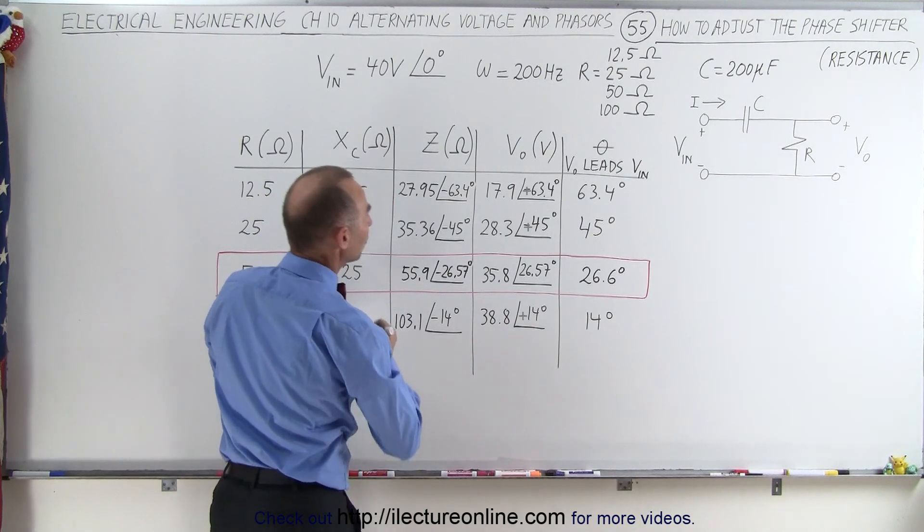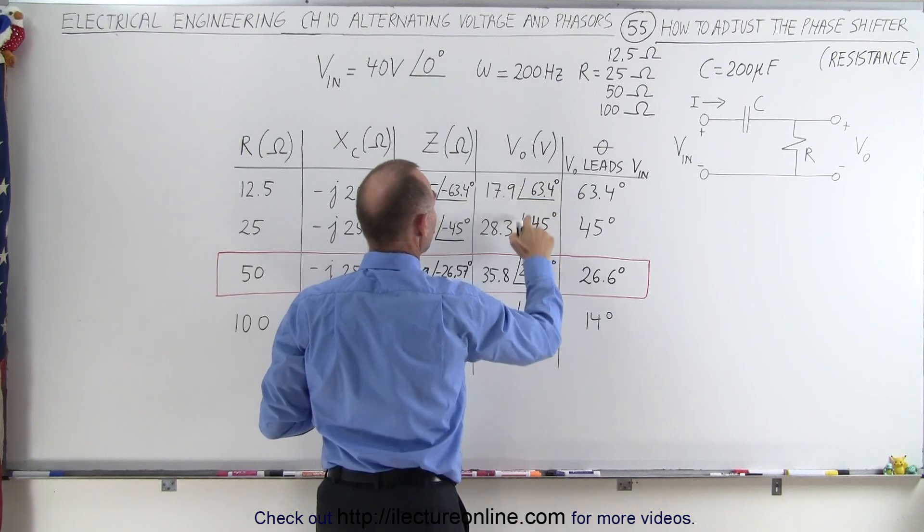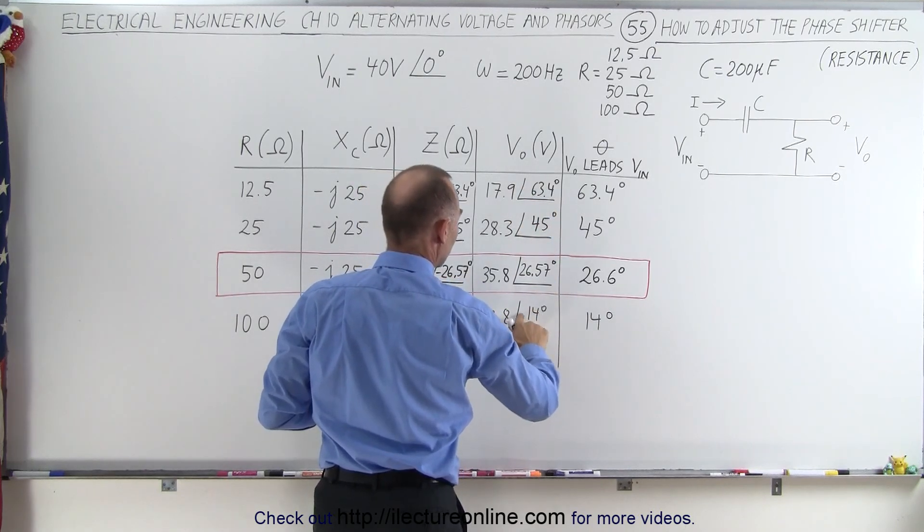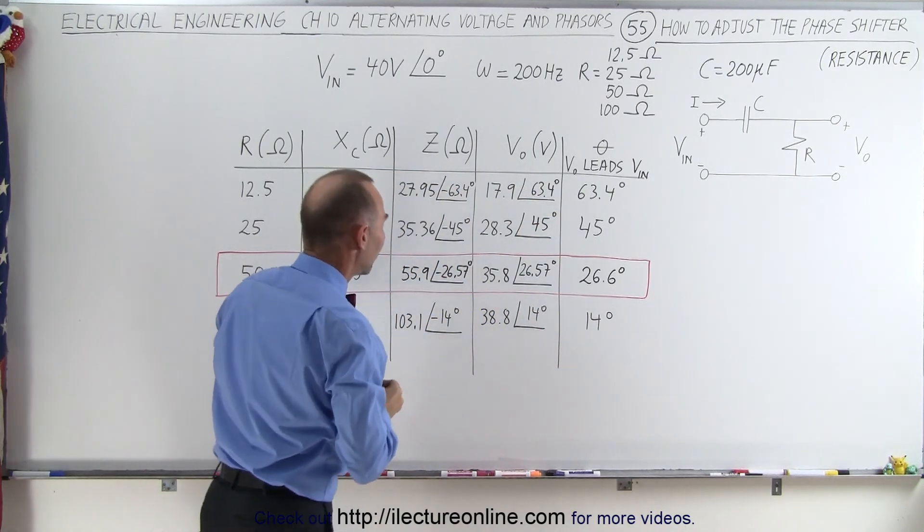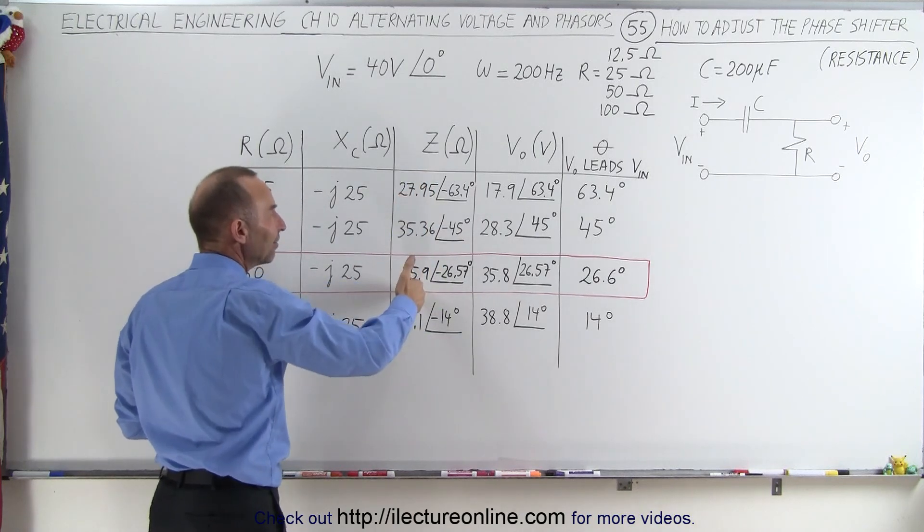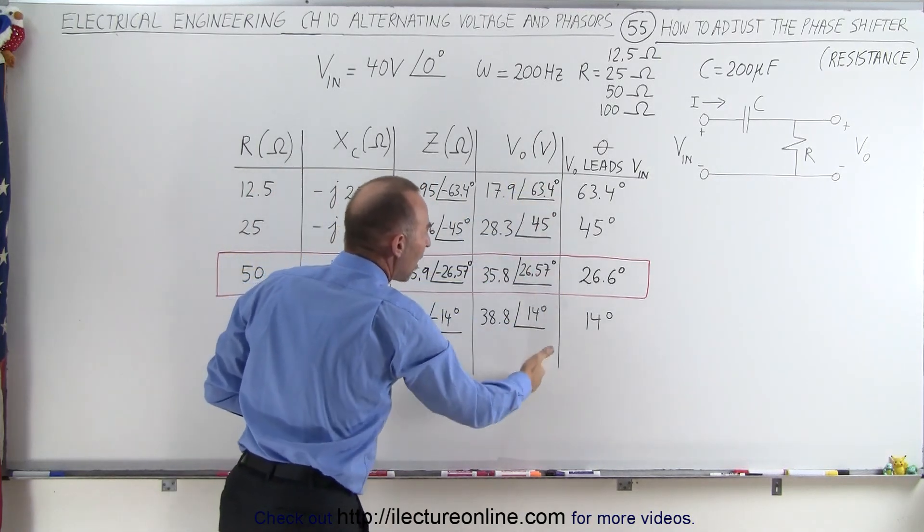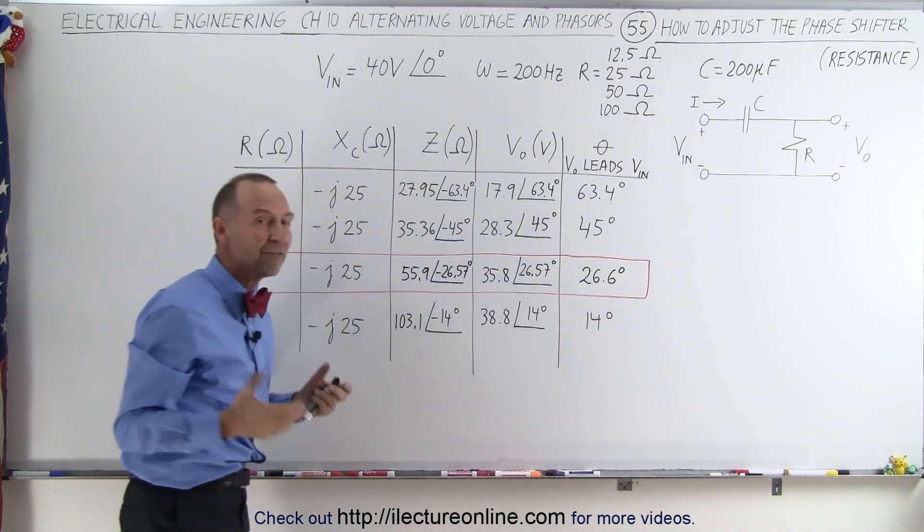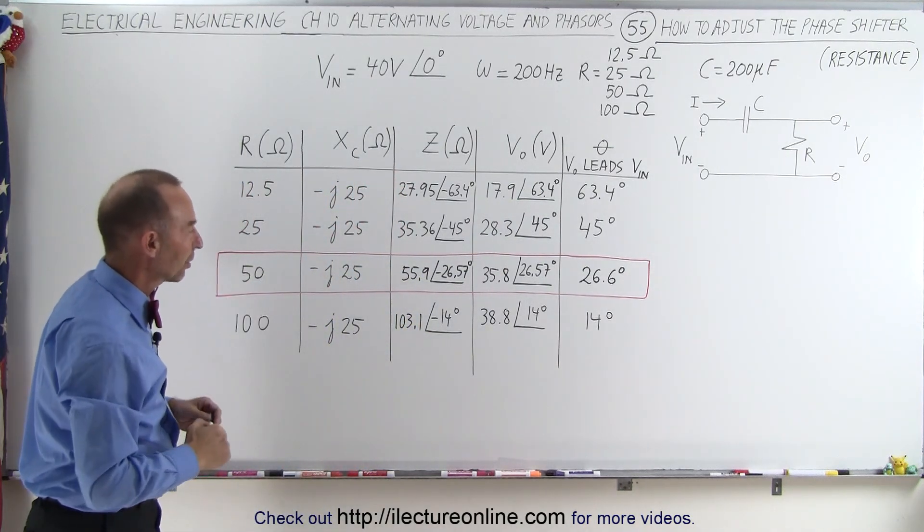Now notice that this should be plus. So let me fix that right here. These should be pluses, not negatives, because if the impedance is negative, then the voltage output will be positive. So we'll have positive angles or positive phase shift using this particular circuit.